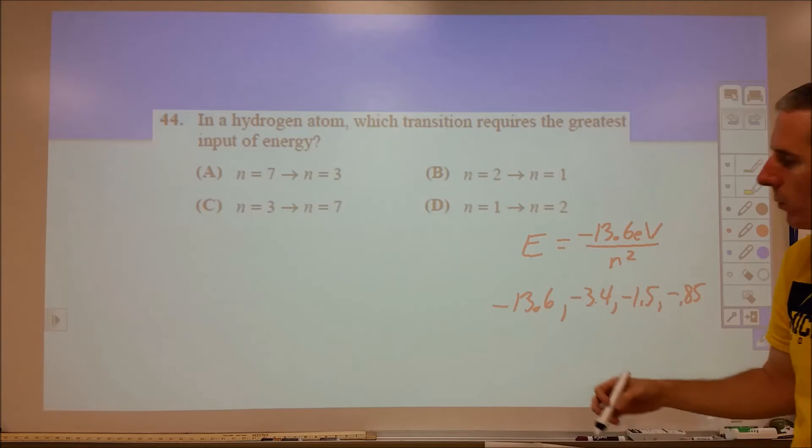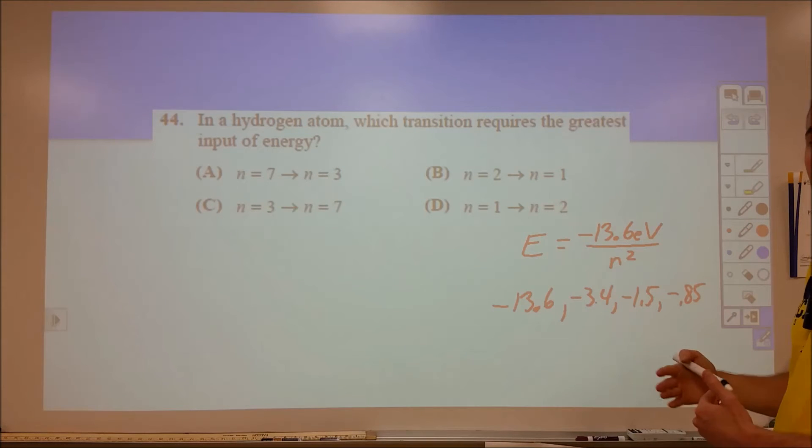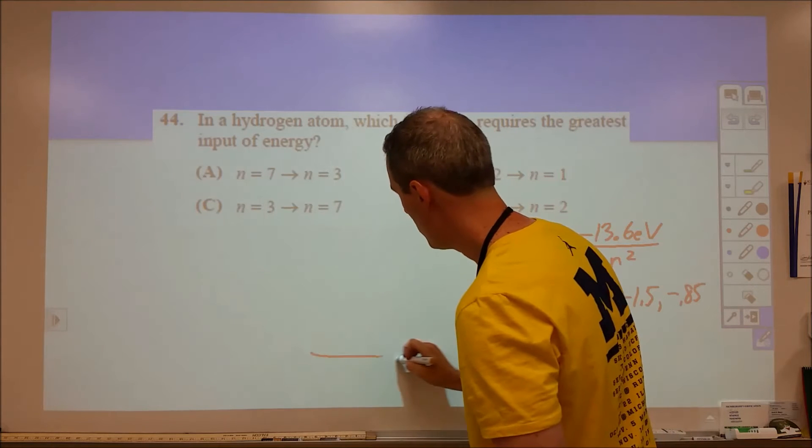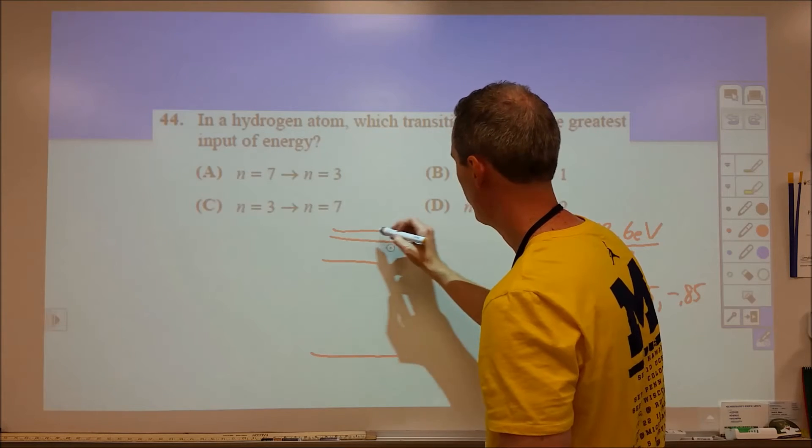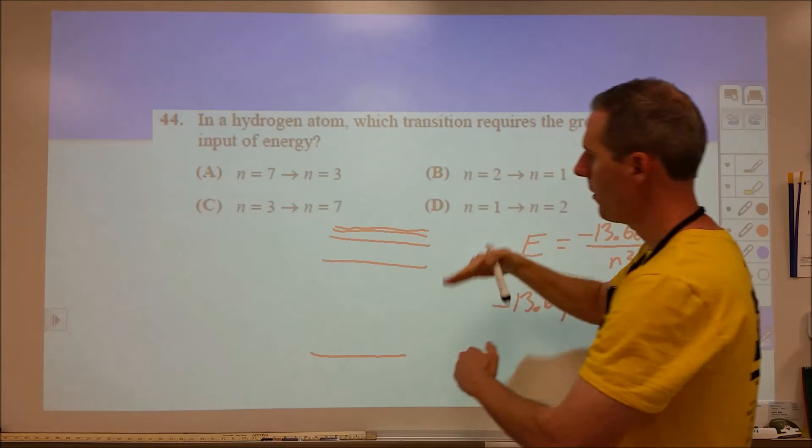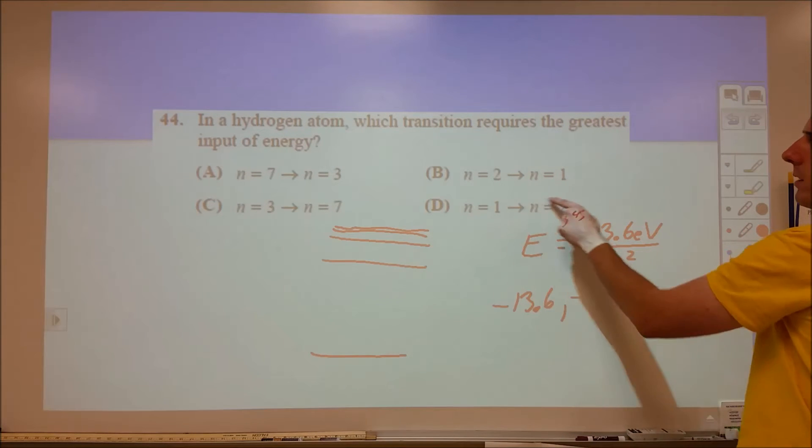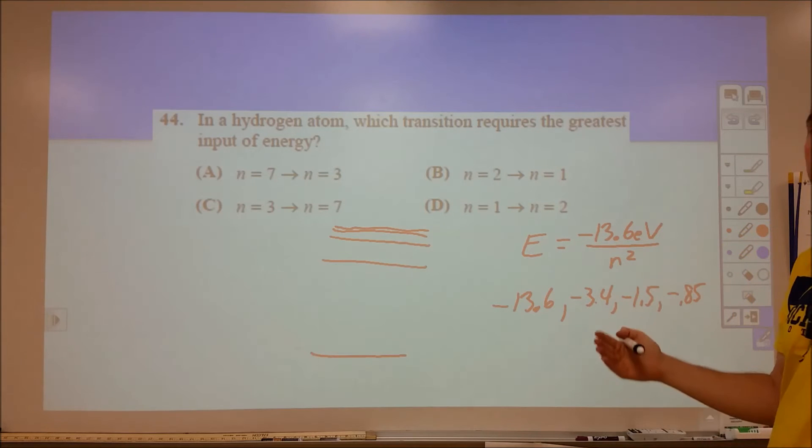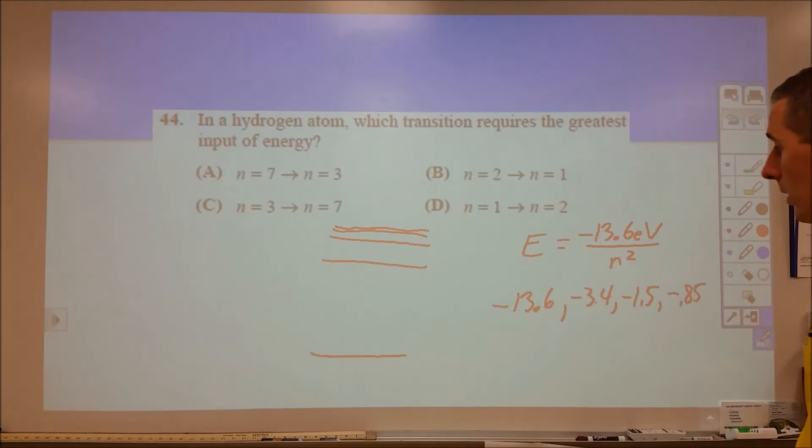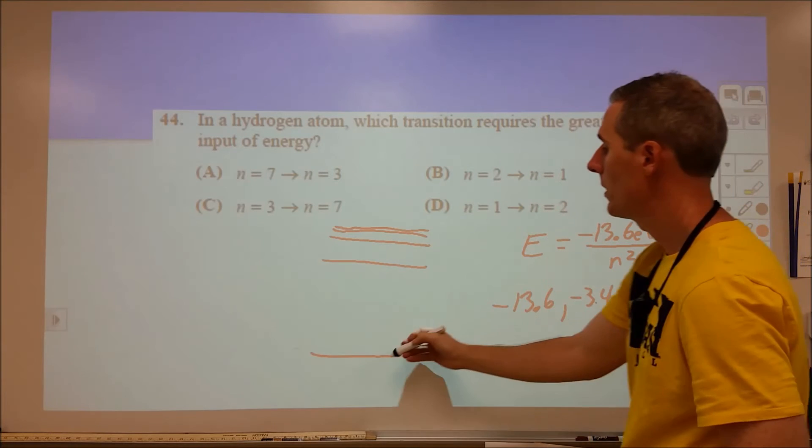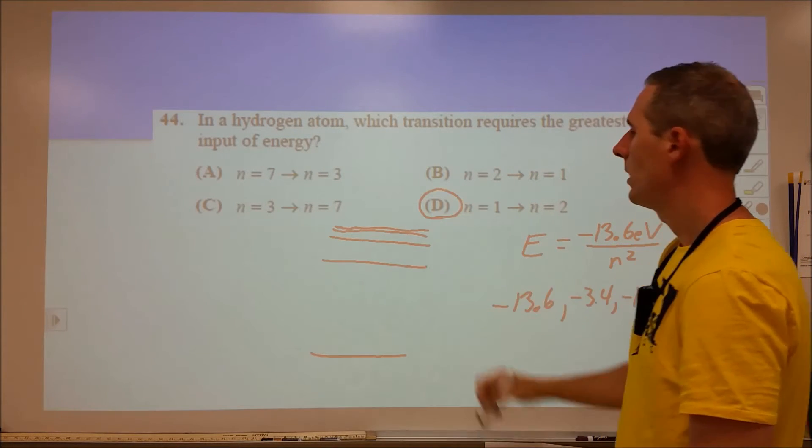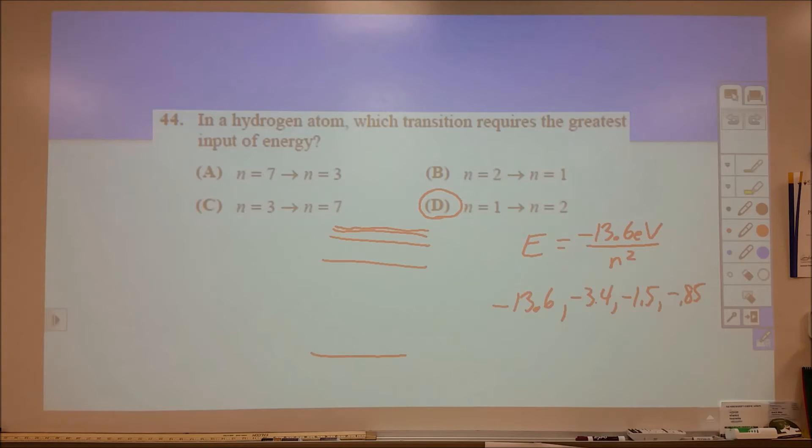What you can see happening is that as our energy levels go up, they become much closer spaced very quickly. We have N equals 1, here's N equals 2, and then N equals 3, N equals 4, and N equals 5. It very rapidly converges. So going from N of 1 to 2, or 2 to 1, is going to be bigger than going from N equals 2 to N equals infinity. Because 13.6 to 3.4 versus 3.4 to 0, this is a bigger jump. We're picking between B and D, and we're looking for the input of energy. So we want the electron to be moving up in energy levels. So we would pick D, N equals 1 to N equals 2.